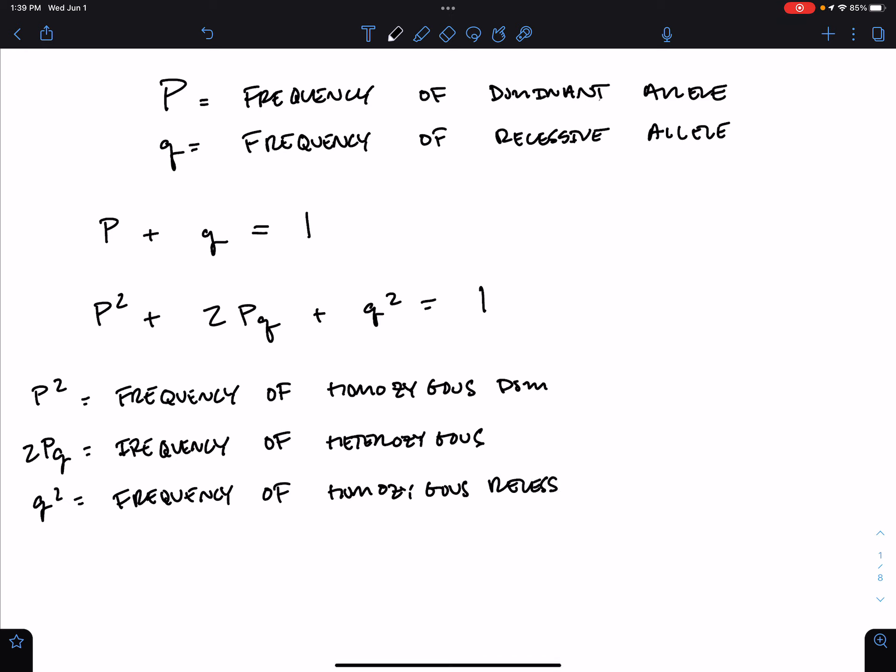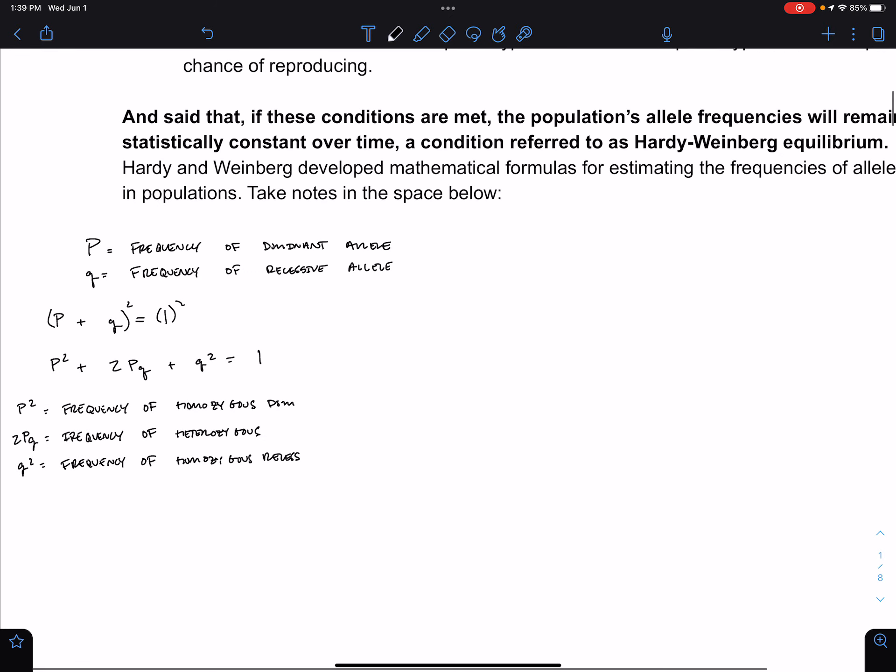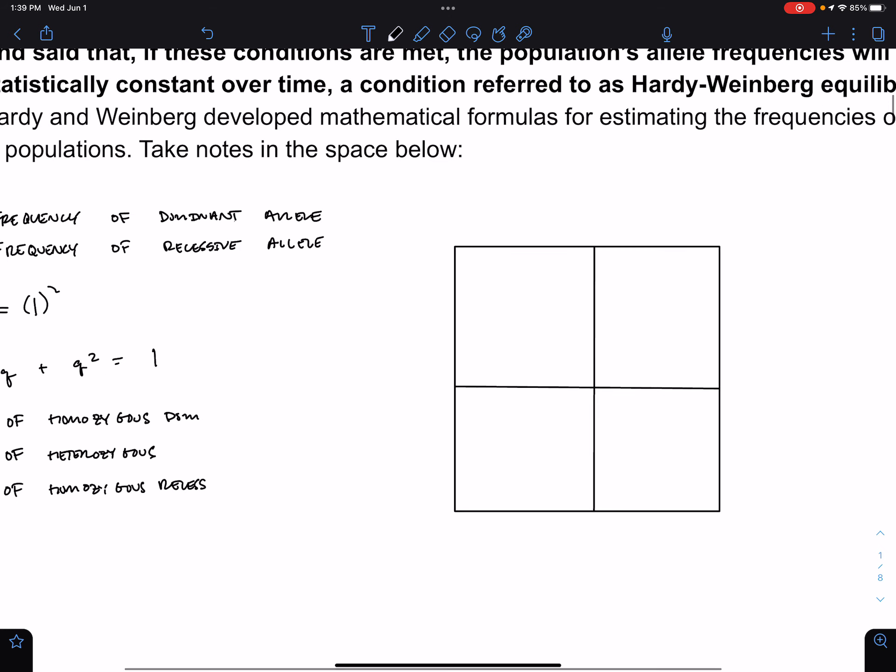It maybe seems like I got this equation out of nowhere, but in reality, if you square both sides of the top equation, you get this equation down below. And also, if you construct a Punnett square, which I'll do right now, where P and Q are my two alleles at the top.